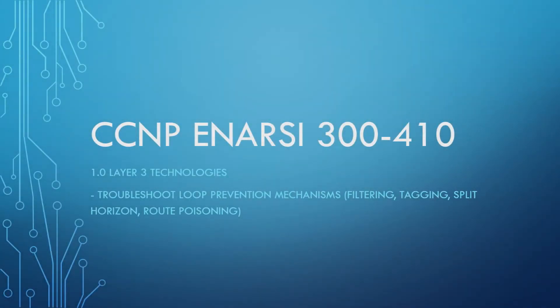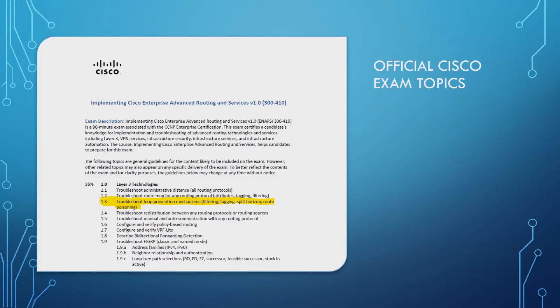Welcome back. We're going to continue on with the remainder of this lesson, which touches on split horizon and route poisoning — covering what they are and how they're involved with loop prevention mechanisms. This is under section 1.3 of the layer 3 technologies from the ENCOR examination blueprint. If you haven't seen the filtering and tagging video yet, check the description or sidebar for the previous lesson.